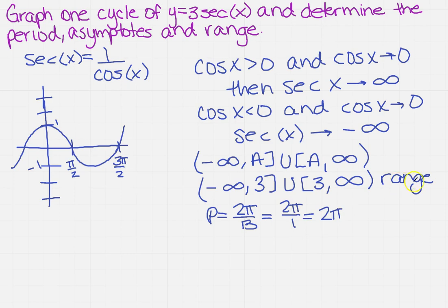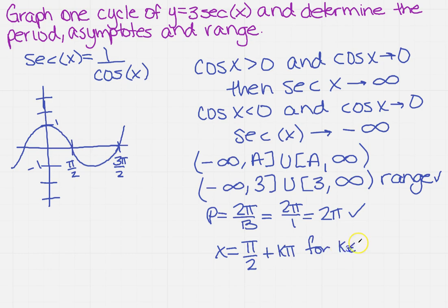We've got the range and the period. The only thing we're missing are the asymptotes. There is a formula for that — either you need to memorize it or hopefully it'll be given to you on an exam. The formula is pi over 2 plus k pi for all k's that are integers. These are going to be your vertical asymptotes.